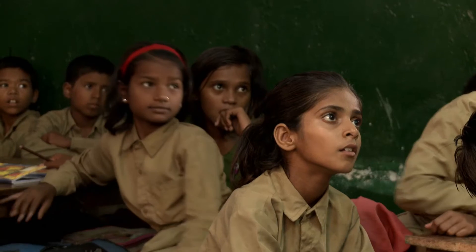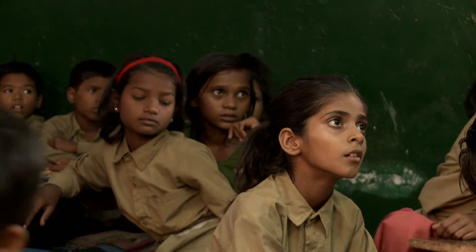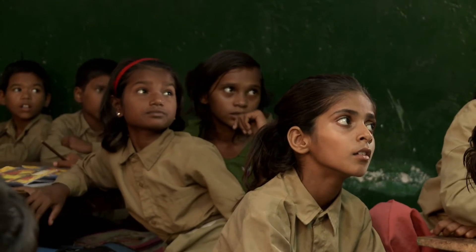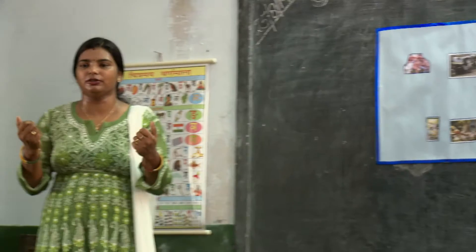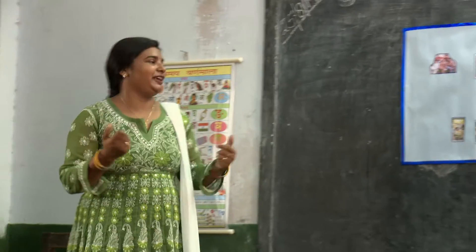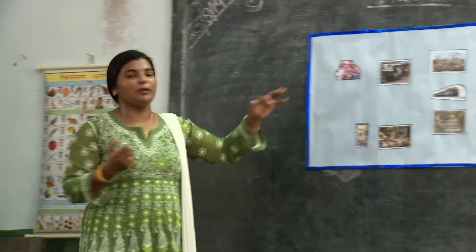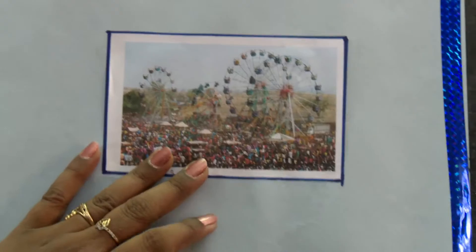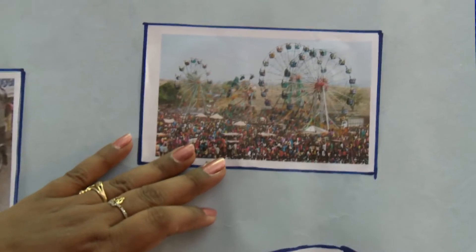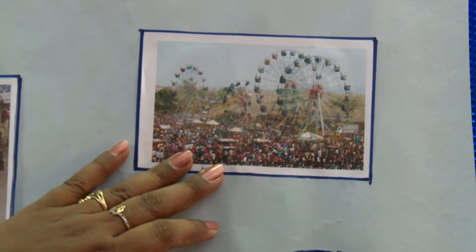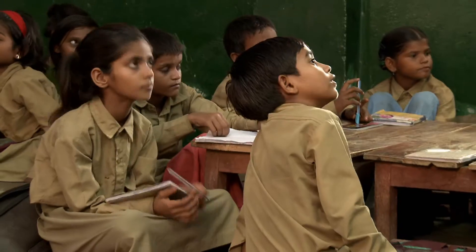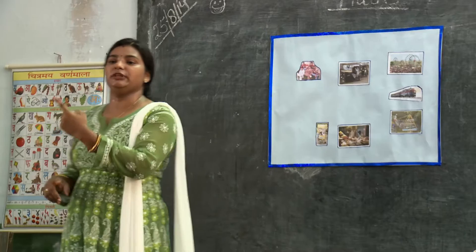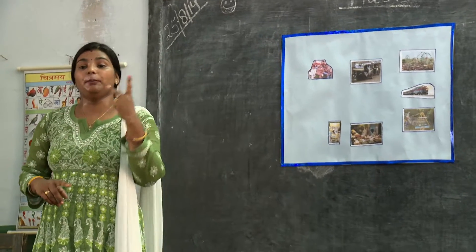The teacher describes the cost of the different rides and the types of food available at the fair. She tells students they go to the giant wheel and explains the cost — one child's ride on the giant wheel is 20 rupees.